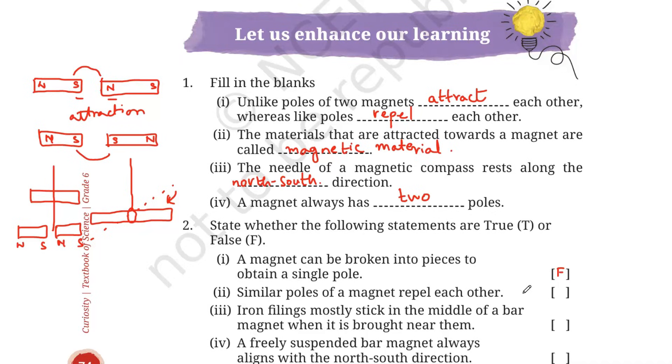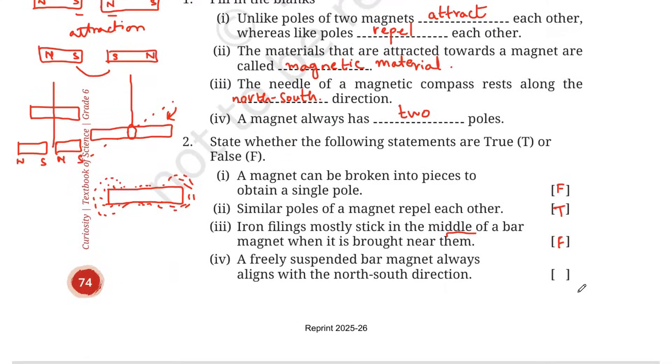Similar poles of a magnet repel each other. Yes, we just did. Like poles repel each other, so this is true. Iron filings mostly stick in the middle of a bar magnet when it is brought near them. Remember, in our lecture we did an activity. If you place a magnet on a piece of paper which is full of iron filings, small pieces of iron, then most of the pieces of the iron will cling towards the pole of the magnet like this, and a little bit will be clinging on to the center. Most iron filings stick at the pole of the magnet, not at the middle of the bar, so it is false. A freely suspended magnet always aligns with the north-south direction. True. If you suspend a magnet freely, it will always align in a north-south direction.